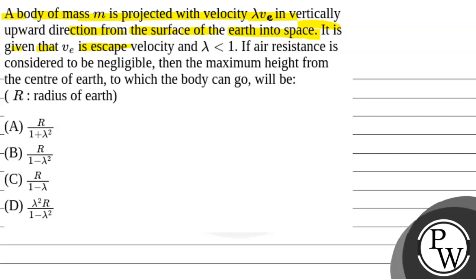It is given that V_e is escape velocity and lambda is less than 1. If air resistance is considered to be negligible, then the maximum height from the center of the earth to which the body can go will be.